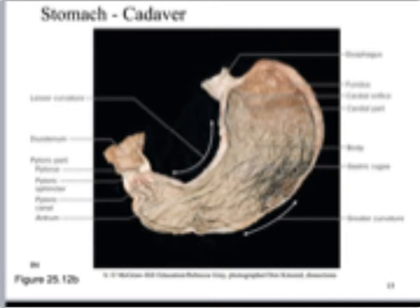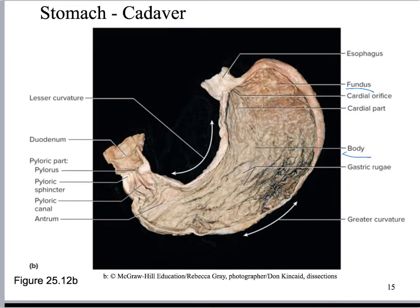In this cadaver image everything is labeled so you can see the different parts — the fundus, the body, and the pylorus. You can see some of the folds of the rugae, and you can see the pyloric sphincter very nicely in this picture, so you should be able to label that.